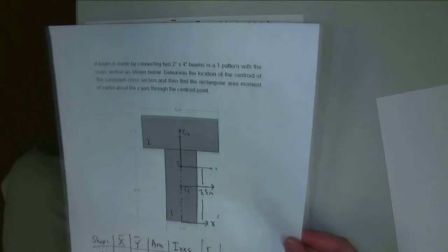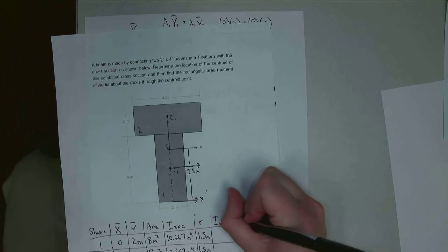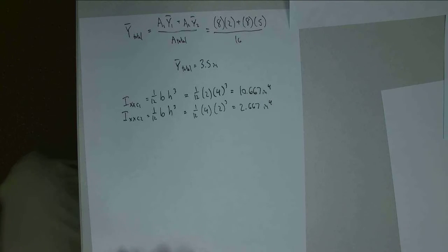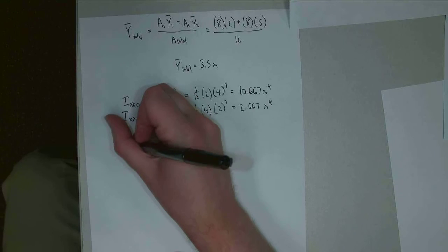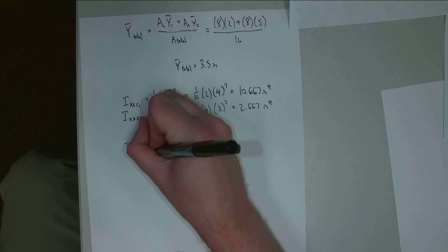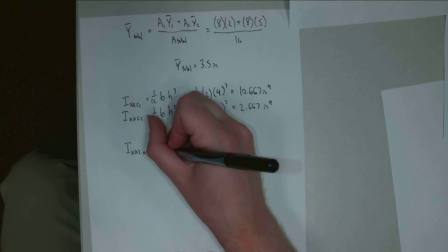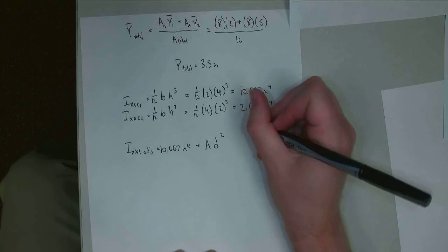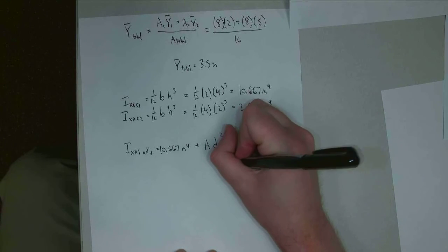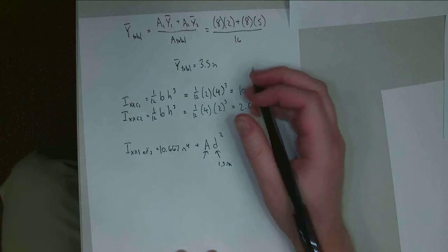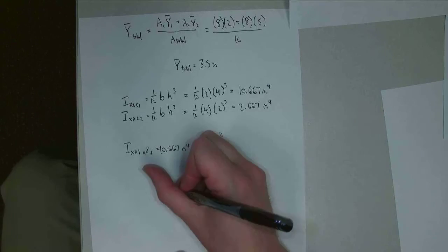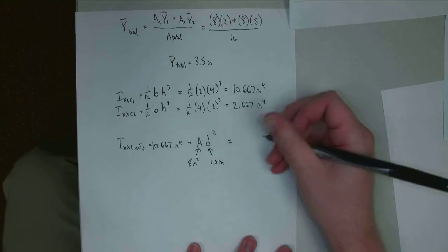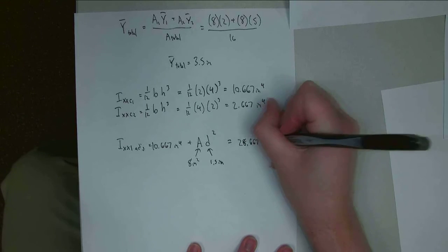Alright, so now I need to find my Ixx adjusted. And so for each of those, I'm going to adjust those values. So Ixx1 adjusted is going to be my original value of 10.667 inches to the 4th plus AD squared, or AR squared in this case. And so this was my 1.5 inches. This was my area, and the area of shape 1 was 8 inches squared. And so Ixx adjusted gives me a value of, or Ixx1 adjusted gives me a value of 28.667 inches to the 4th.